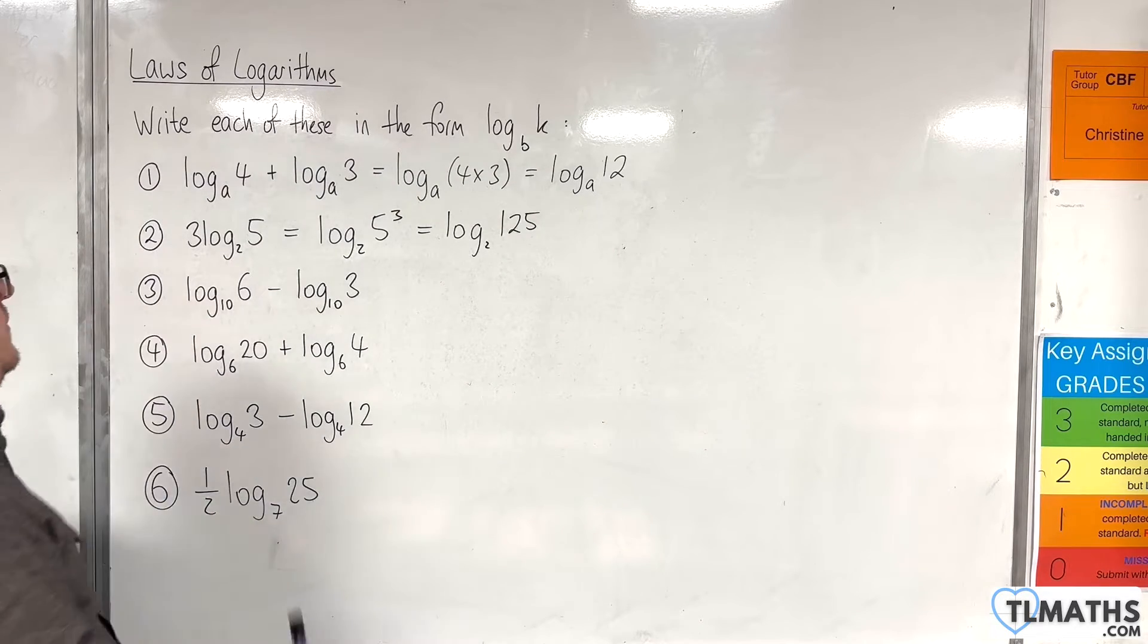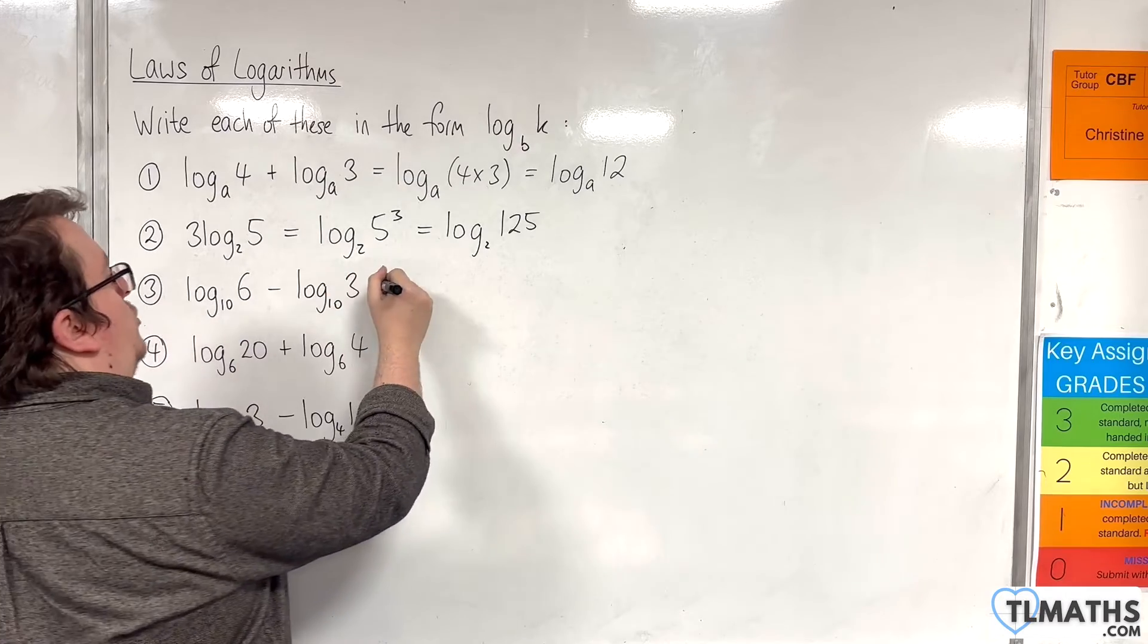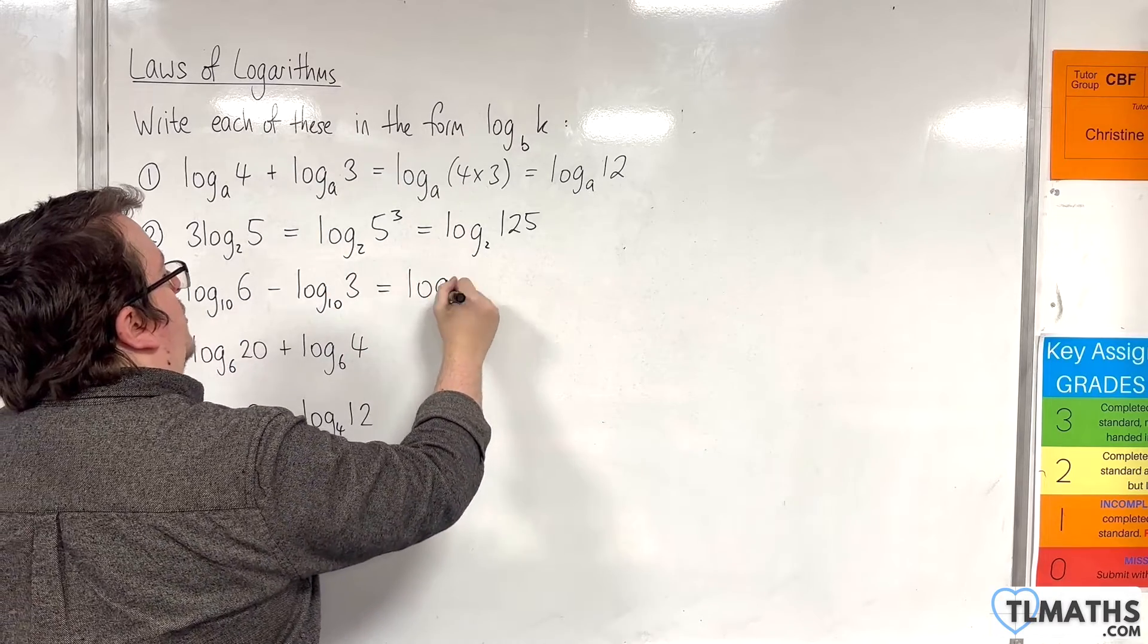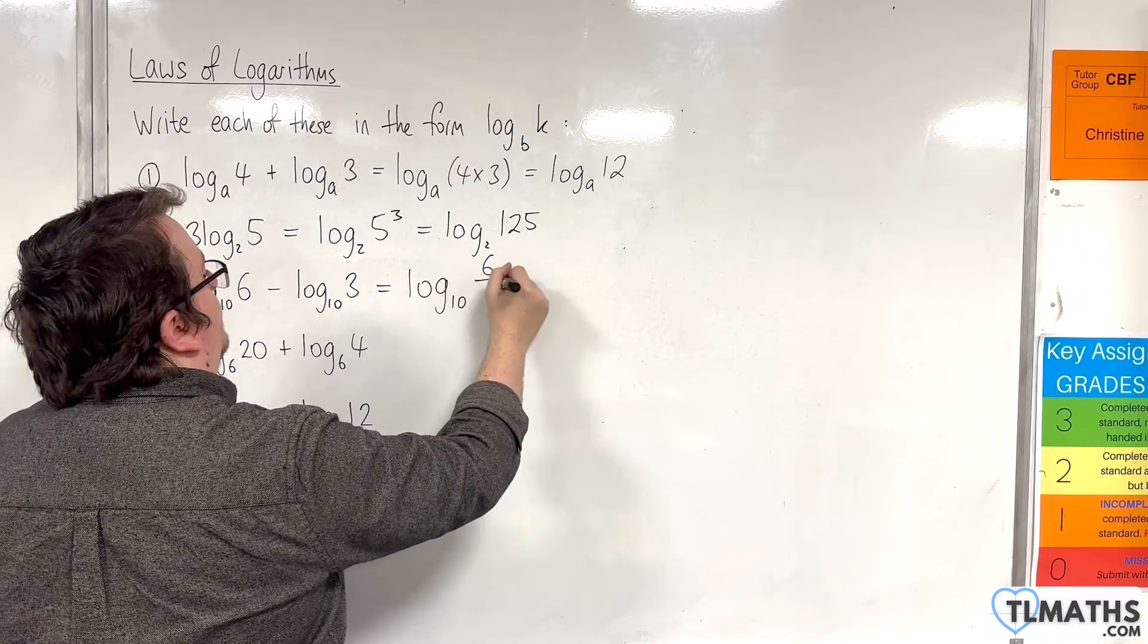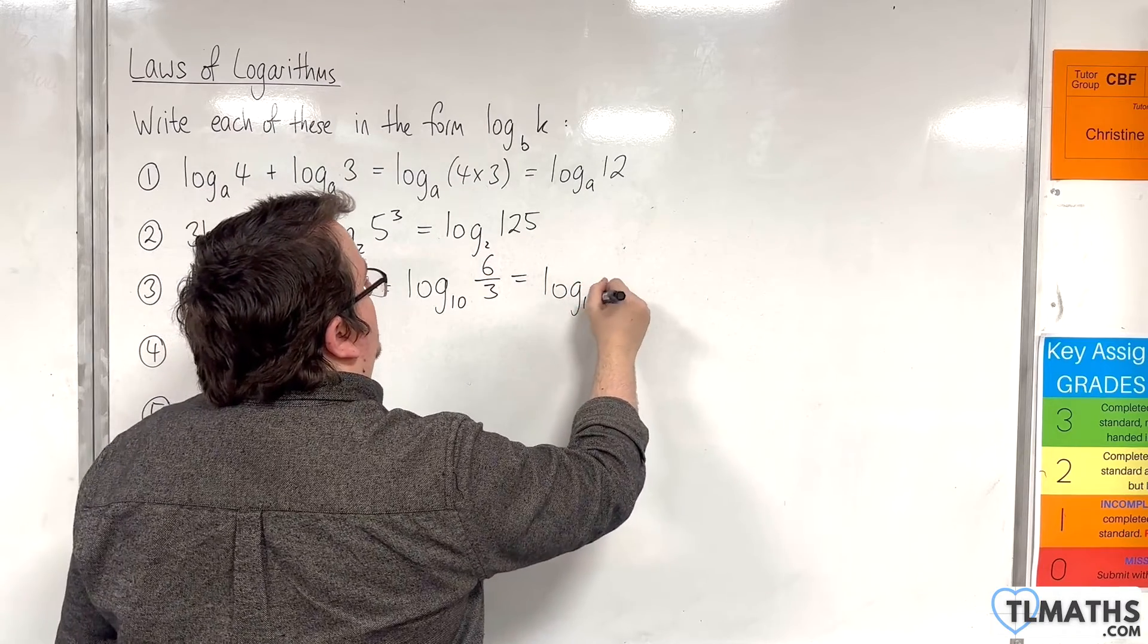Number 3, the base number is the same. We have a subtraction so we're going to use the quotient rule. So log base 10 of 6 over 3. And that of course is log base 10 of 2.